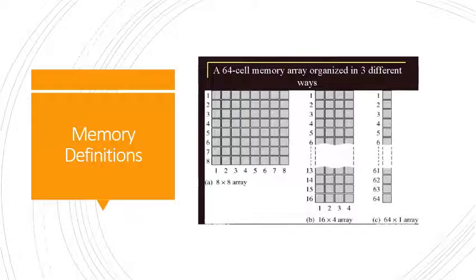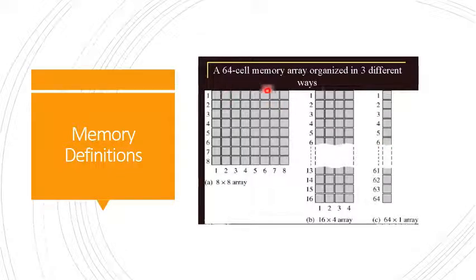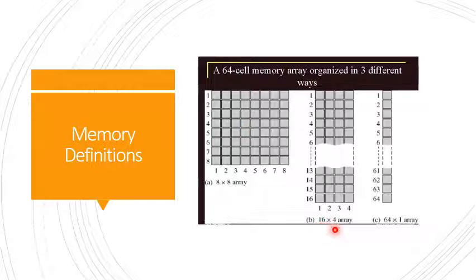The diagram shown here is a 64-cell memory array organized in 3 different ways. The first is an 8×8 array, next is a 16×4 array, and the final one is a 64×1 array.